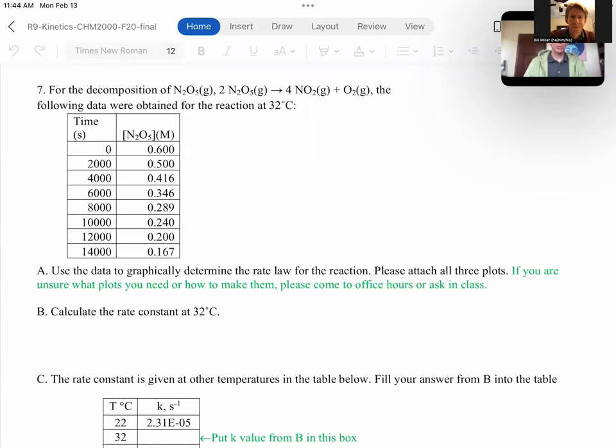Hi, let me help you work through problem seven. Problem seven says for the decomposition of N2O5, which is dinitrogen pentoxide, to four nitrogen dioxide plus one oxygen, the following data were obtained for the reaction at 32 degrees Celsius. And what we have here is data for time versus concentration. We can see that as time increases, concentration goes down.